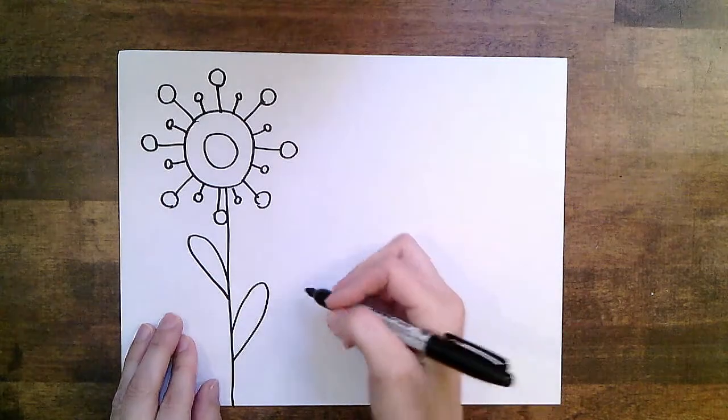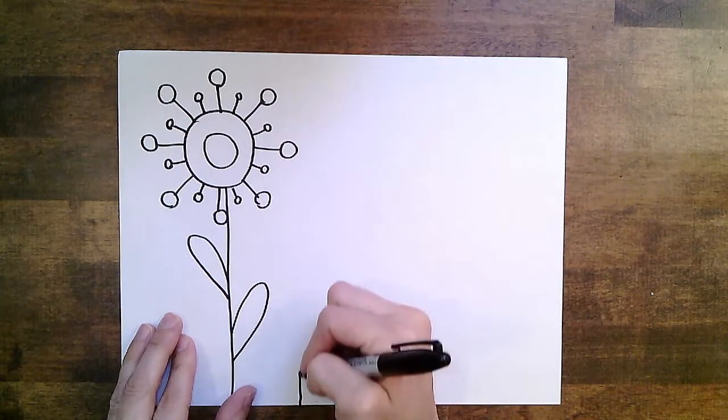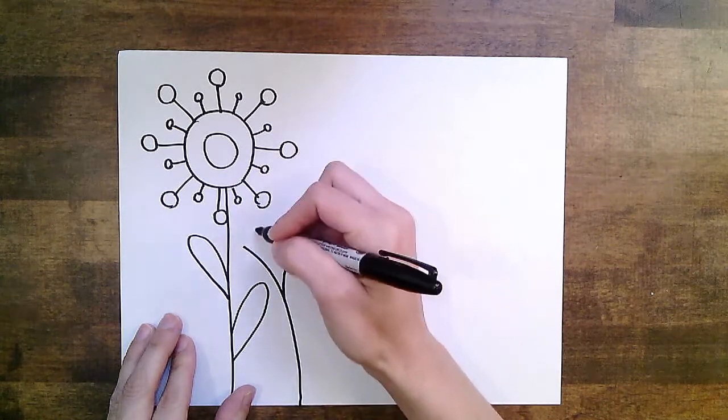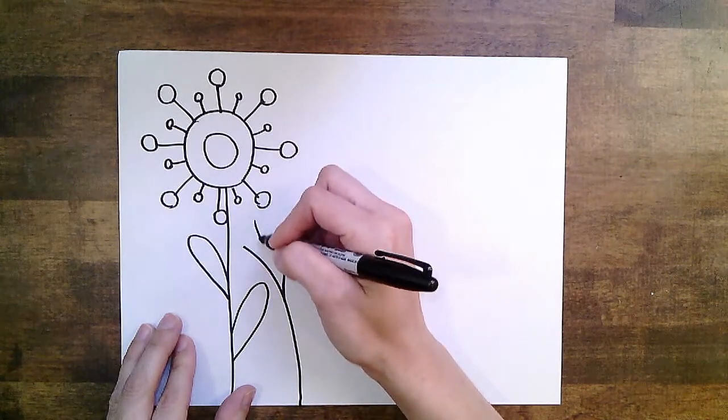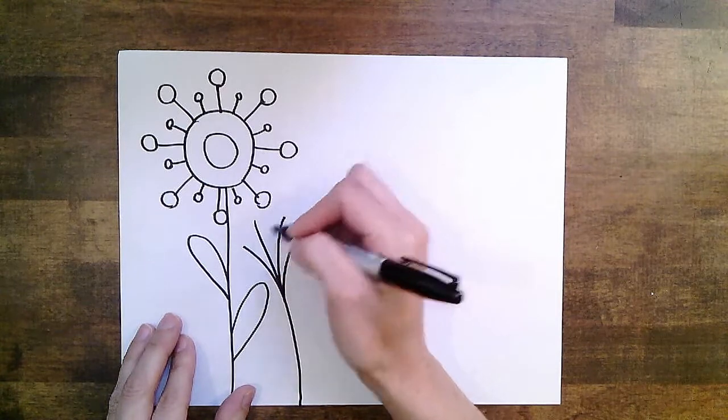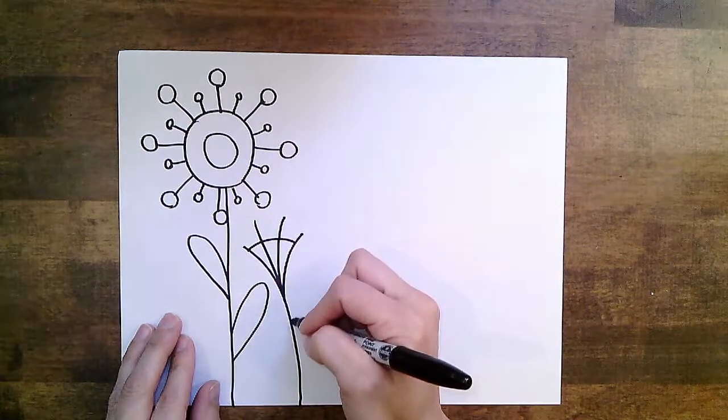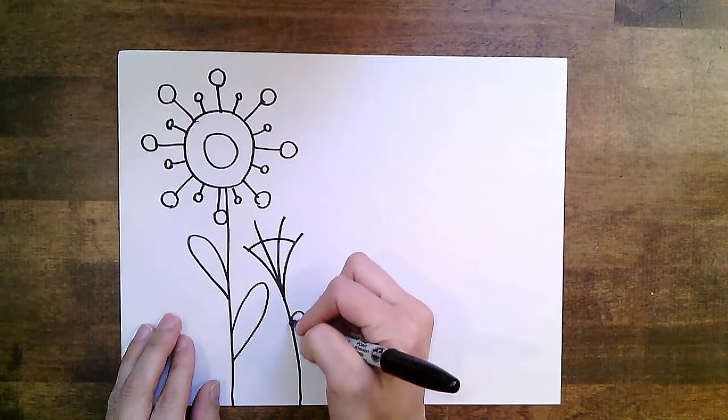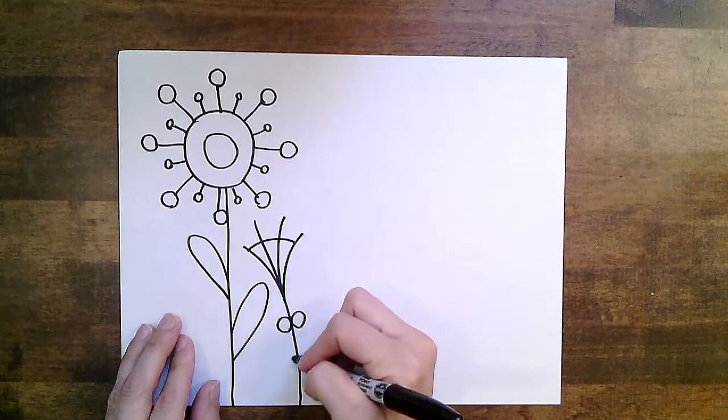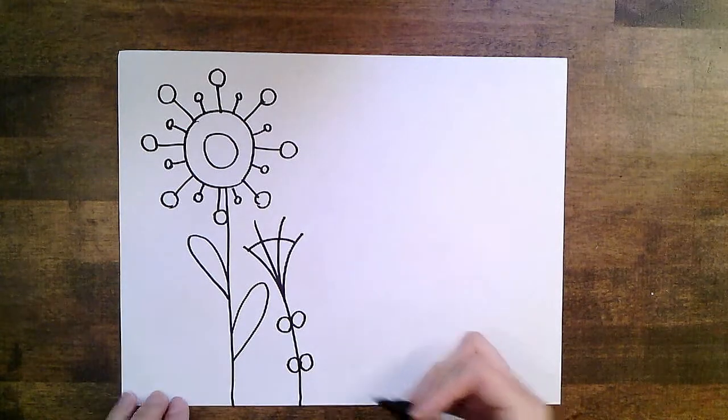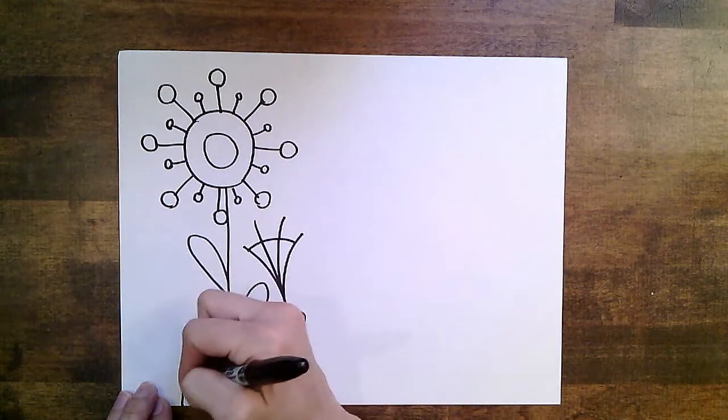So for my next flower, I'm going to start with the stem this time. Maybe make it curved. Another curved line. How about some other lines in here? And yeah, a curved line for the top. That works. A little round leaves. You can make your leaves whatever shape you want. I'm trying to invent a bunch of different styles. I like that flower.